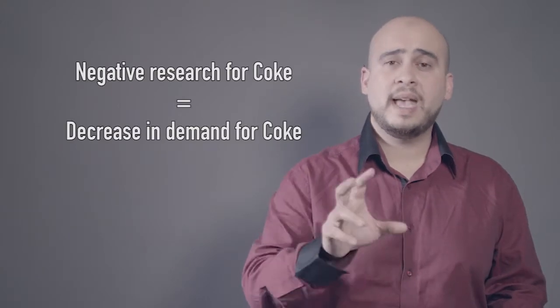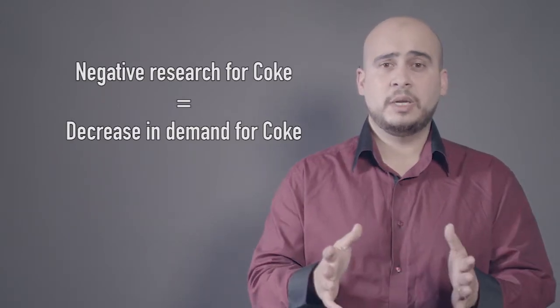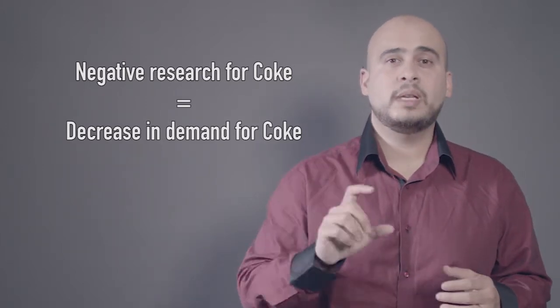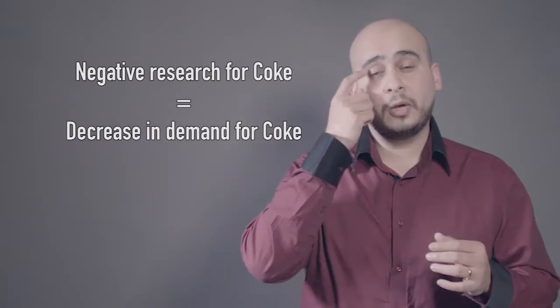So that's the main difference. For the reverse example, let's say a research is published saying Coke has harmful chemicals that could be cancerous. In that situation, the demand for Coke will decrease — not the quantity. So if it is quantity demanded, it has to be the price of the product. If it is demand, it has to be other factors, because the law of demand and supply requires everything else to remain constant. If that constant condition does not hold, it is the demand that is being affected.